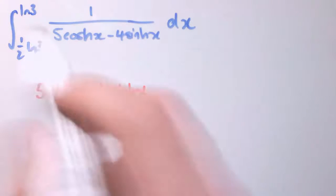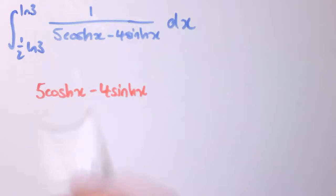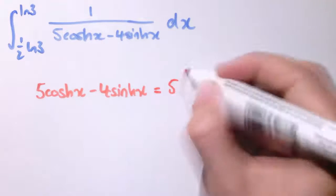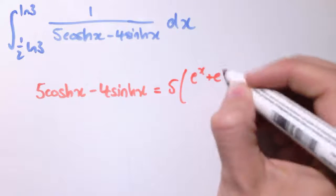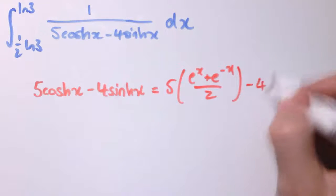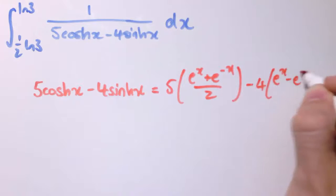So rather than writing the integral out over and over again, let's just deal with this bit separately. So that's 5 times (e^x plus e^(-x))/2 minus 4 times (e^x minus e^(-x))/2.